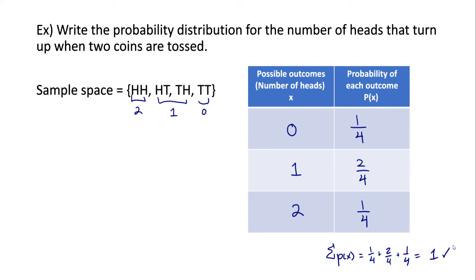So when you're writing probability distributions, one way you can determine whether or not you might have made a mistake is to add up all the probabilities in your distribution. If they don't add up to one, you probably did something wrong. If they do add up to one, it's most likely right.